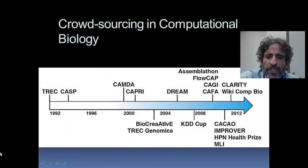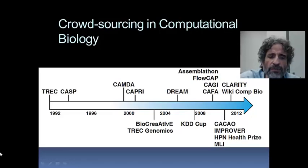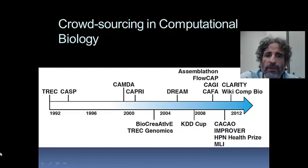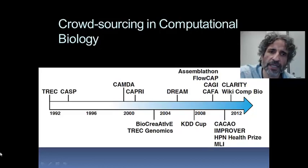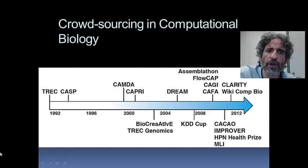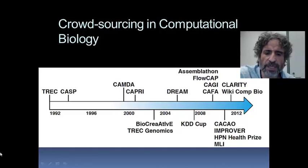In the area of systems biology and computational biology, there have been a number of interesting efforts over the course of the last two decades, starting probably with one of the most famous — trying to understand how well we do when solving the problem of protein structure prediction. I'm referring to CASP, or Critical Assessment of Protein Structure Prediction, which started in 1994 and triggered a number of similar ideas in different fields.